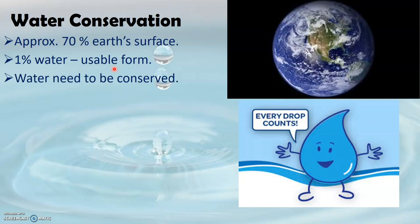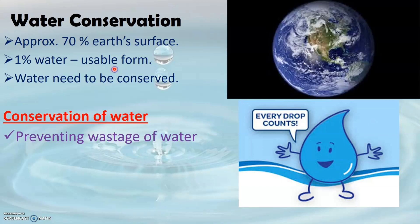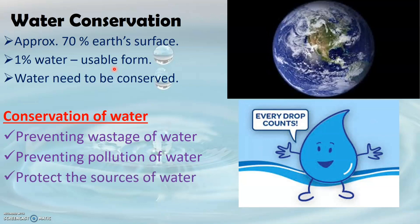What do we mean by conservation of water? Conservation of water means preventing wastage of water. We can prevent wastage of water by preventing pollution of water. By preventing pollution, we are actually protecting the sources of water.